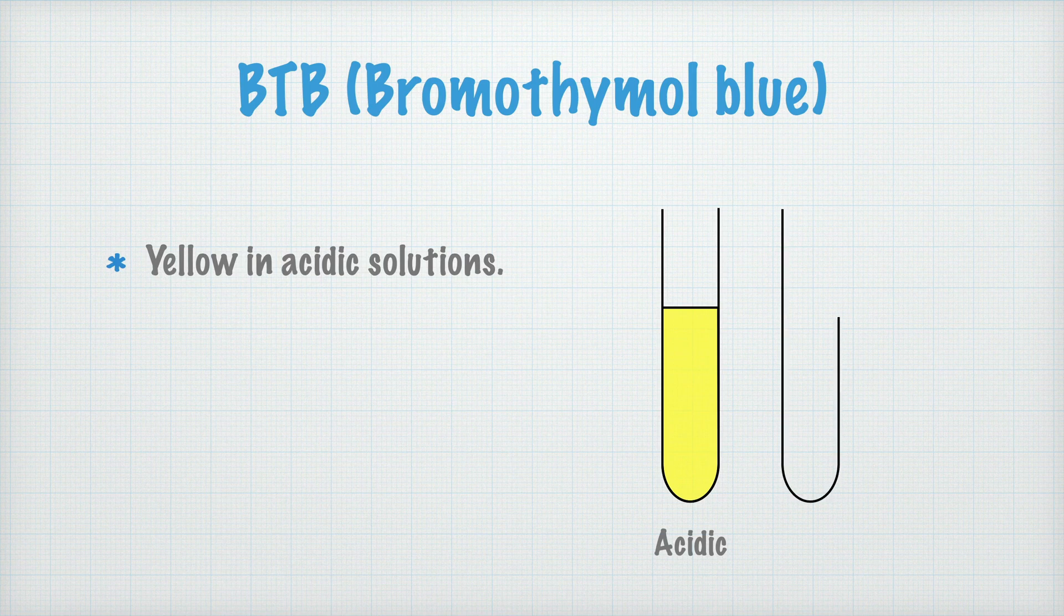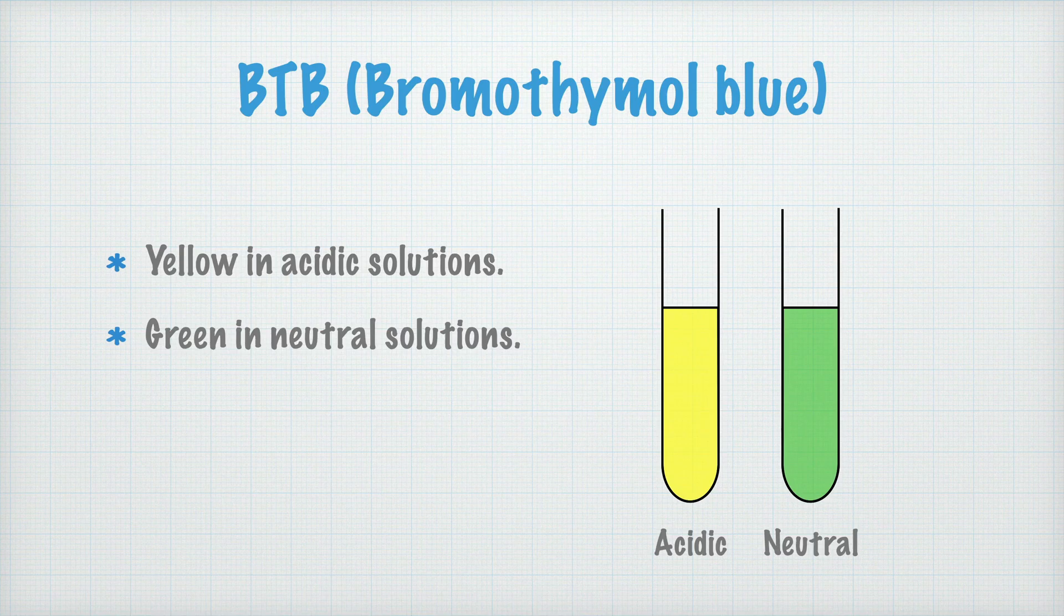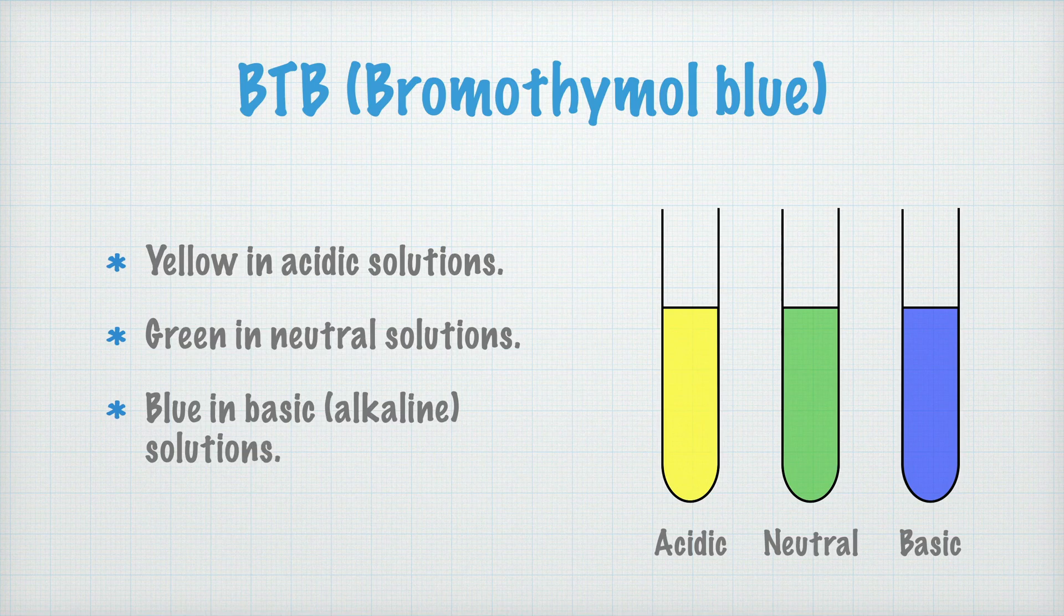If we instead have a test tube with a neutral solution, it will become green if we add some BtB. BtB is thus green in neutral solutions. Last, a basic or alkaline solution becomes blue if we add BtB. Blue in basic or alkaline solutions then.